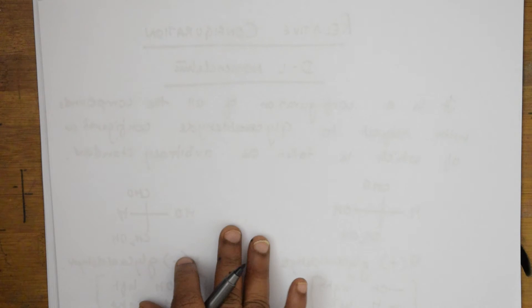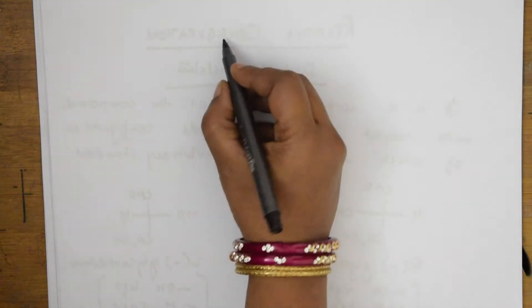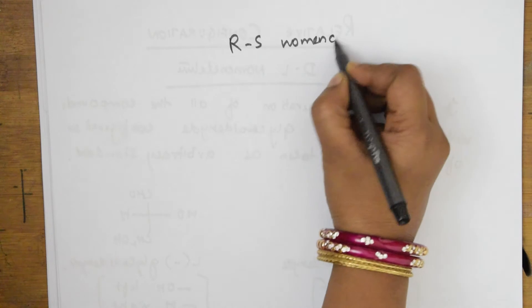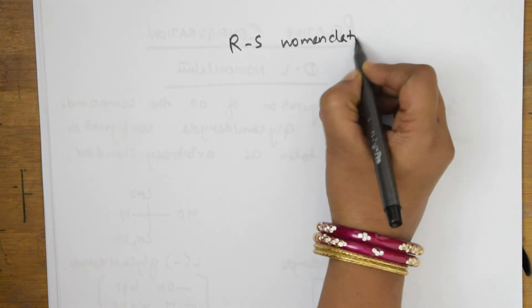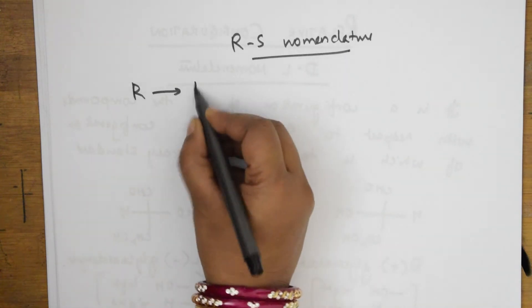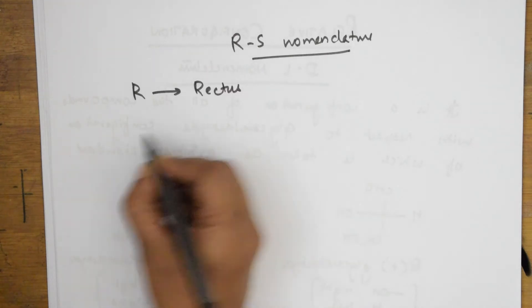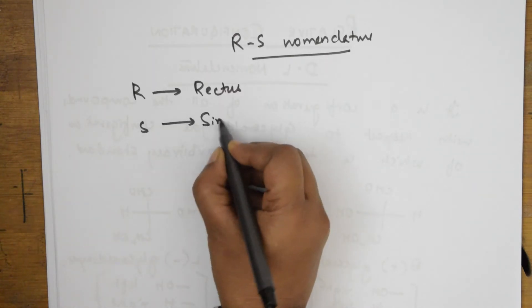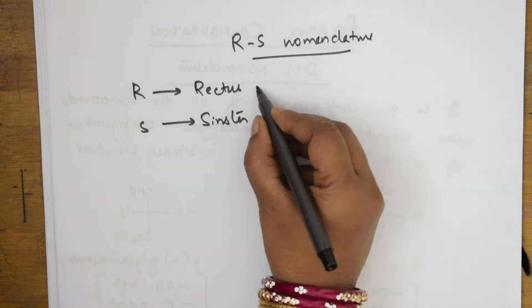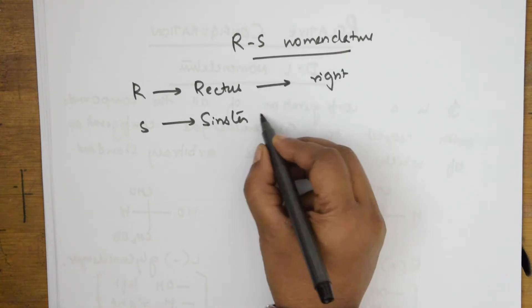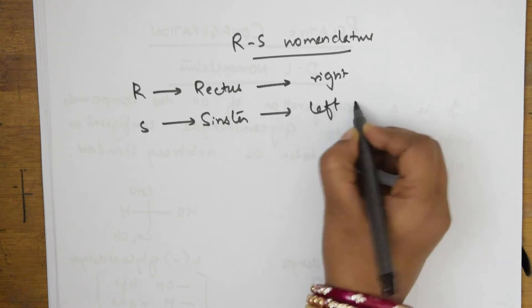Now let us come back and see what is meant by RS nomenclature. R stands for Rectus and S stands for Sinister. Rectus means right and Sinister means left.